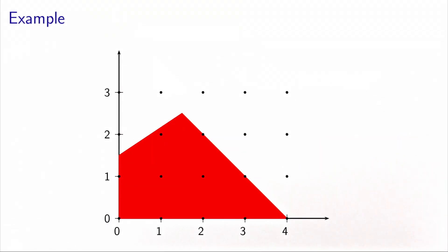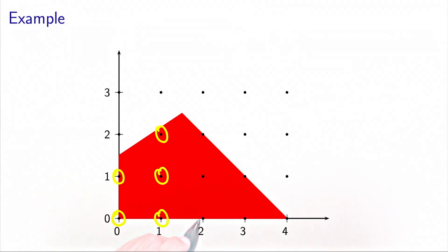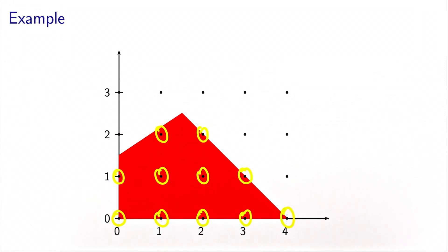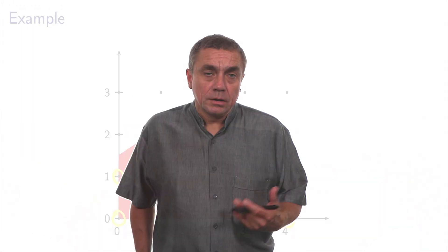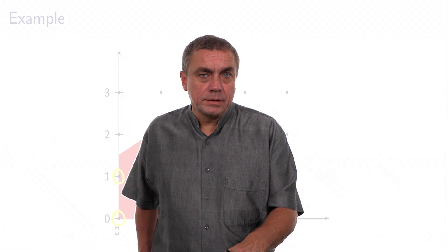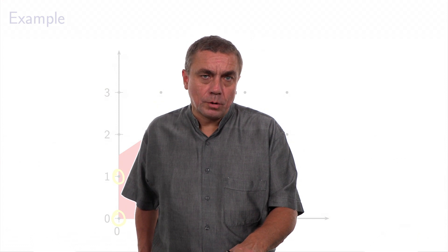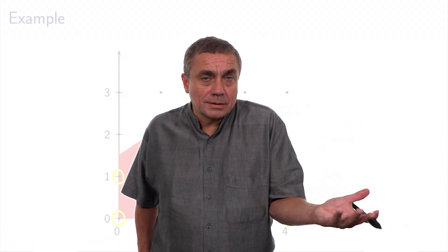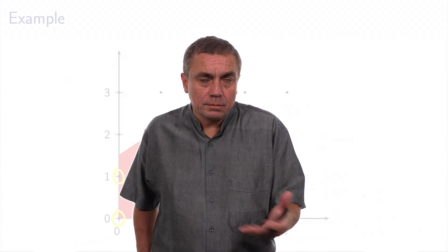This is a representation of the feasible set of this problem. It is the intersection of the polyhedron defined by the inequality constraints and the lattice of integer values. In this case, we have eleven feasible solutions, so actually the branch and bound algorithm is not necessary to solve it, but let's use it to illustrate how it works.